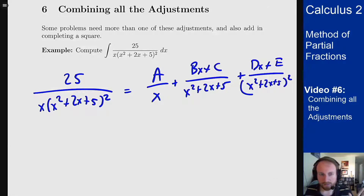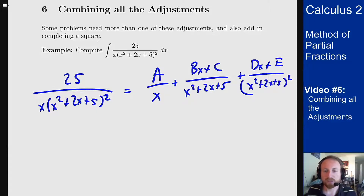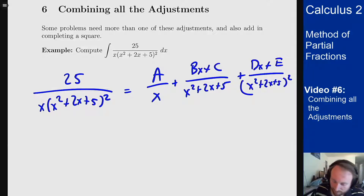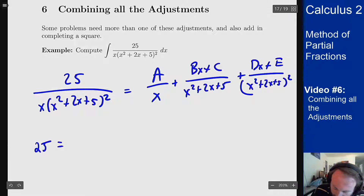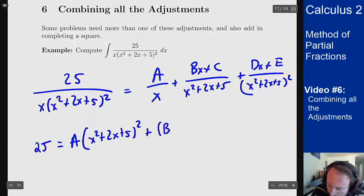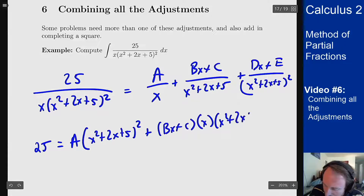This is going to be a long problem with a lot of parts, but you'll see how they all come together at the end. Using the value substitution approach — clearing denominators — gives us: 25 = A(x² + 2x + 5)² + (Bx + C)·x·(x² + 2x + 5) + Dx² + Ex.